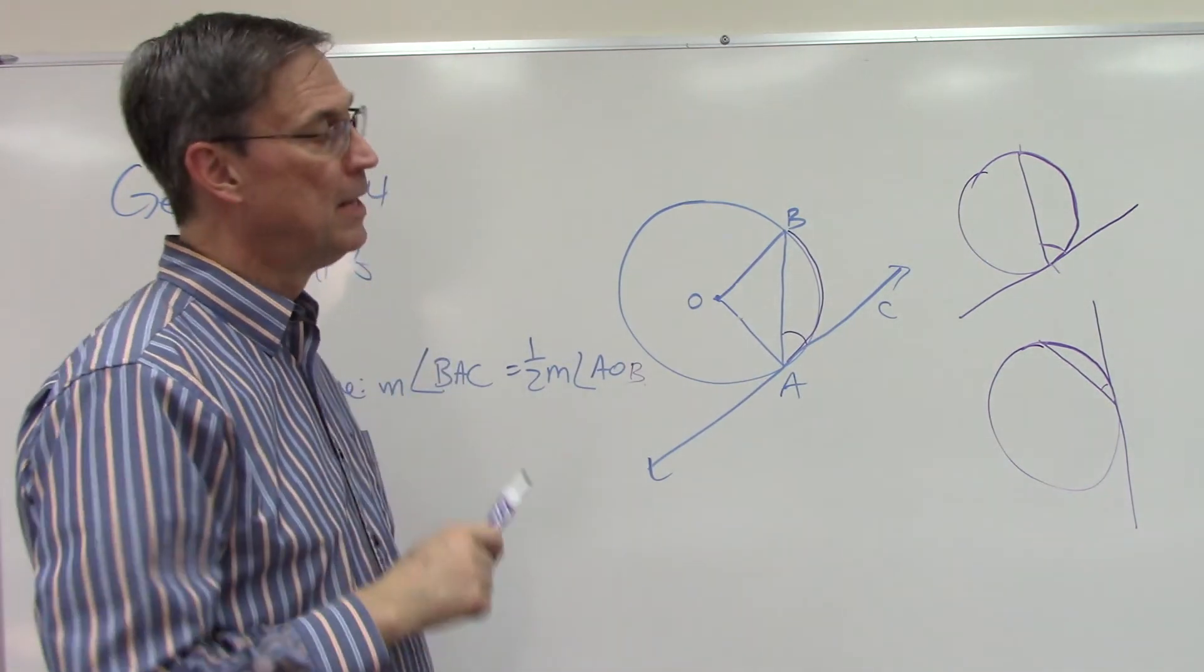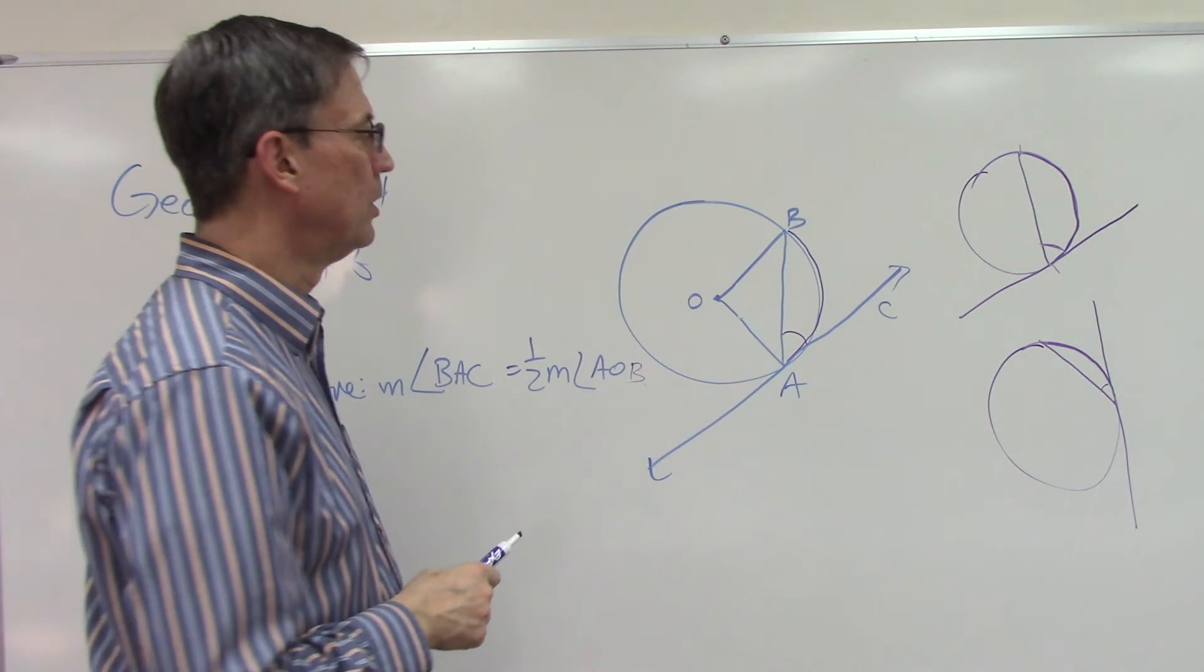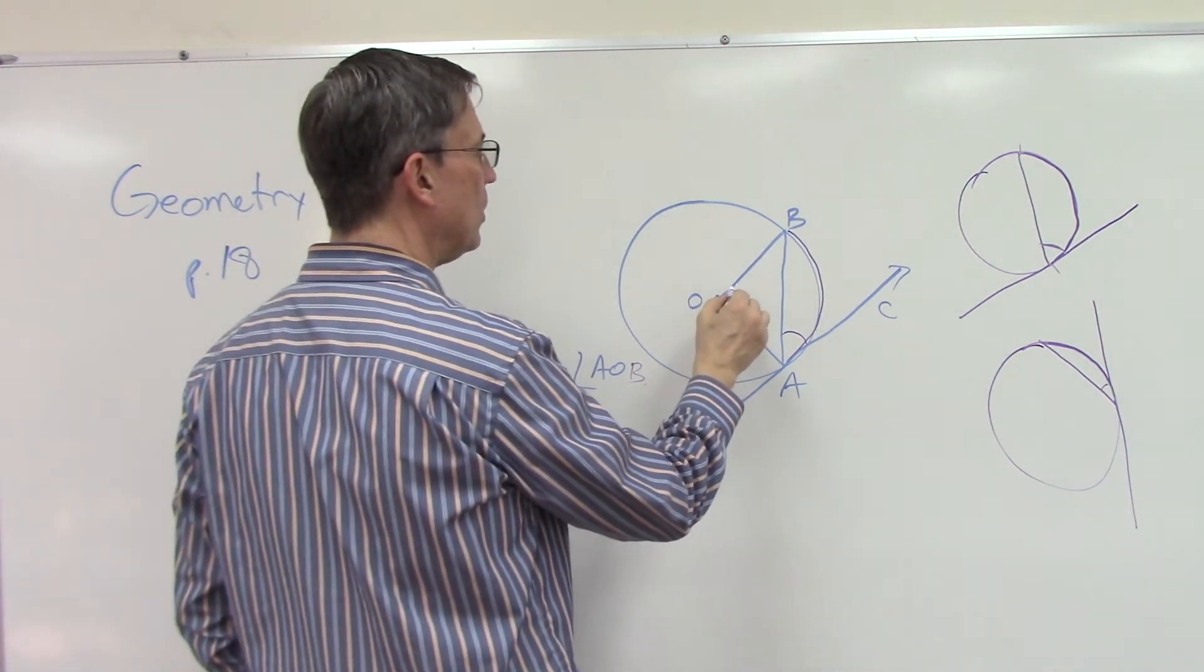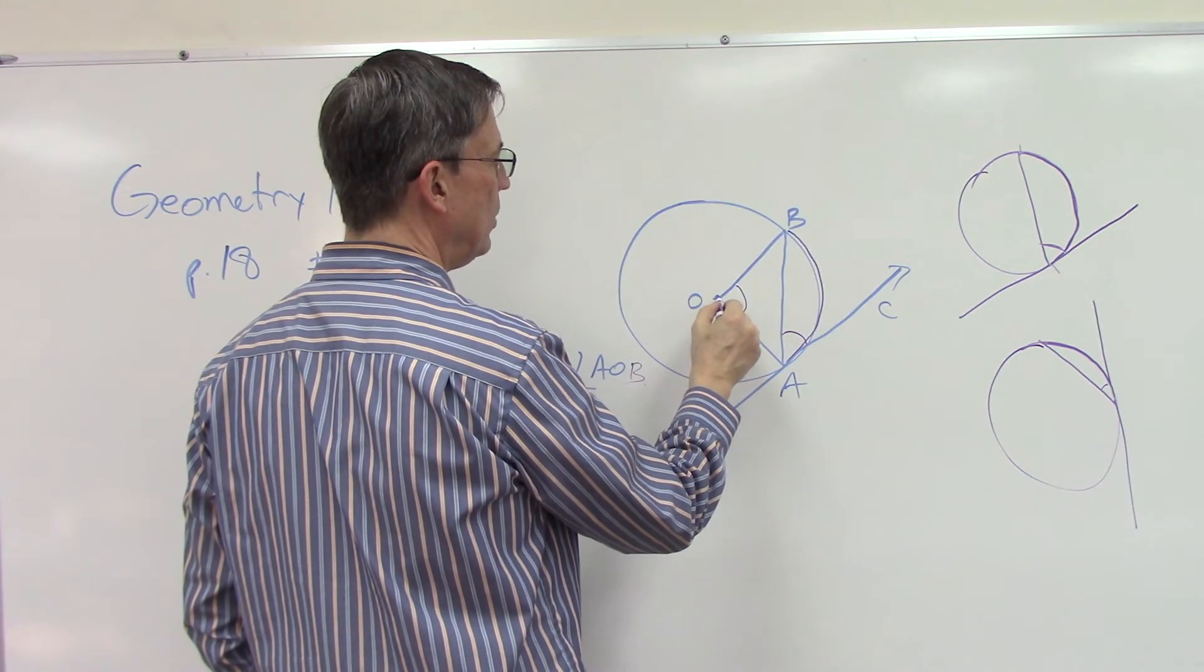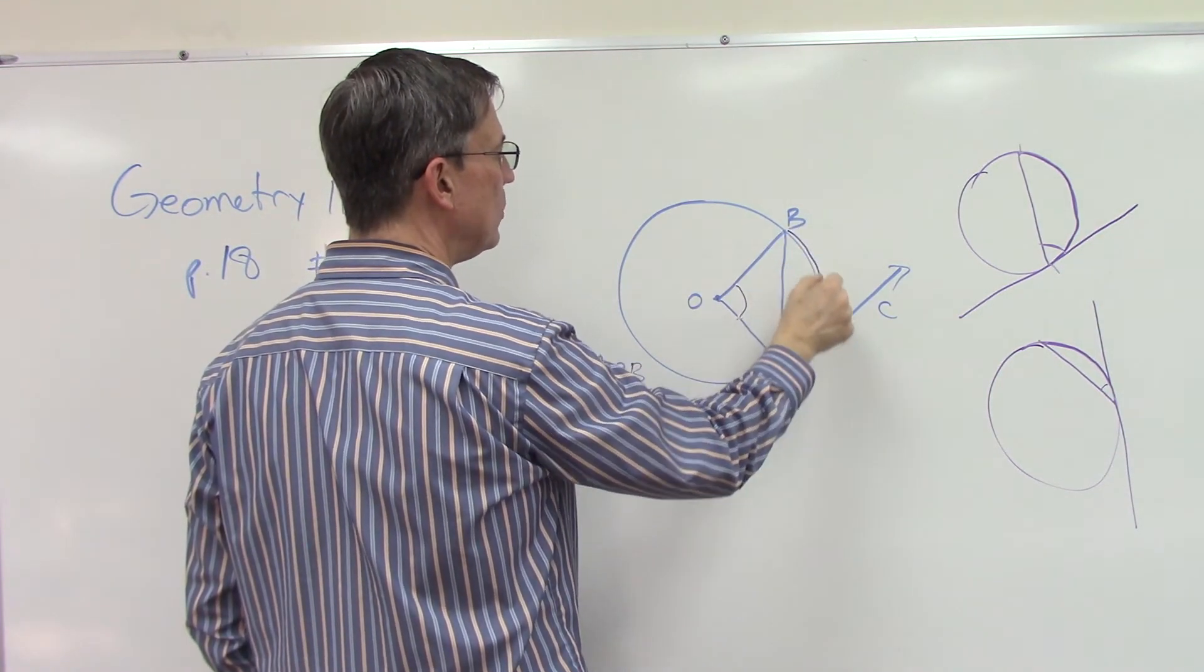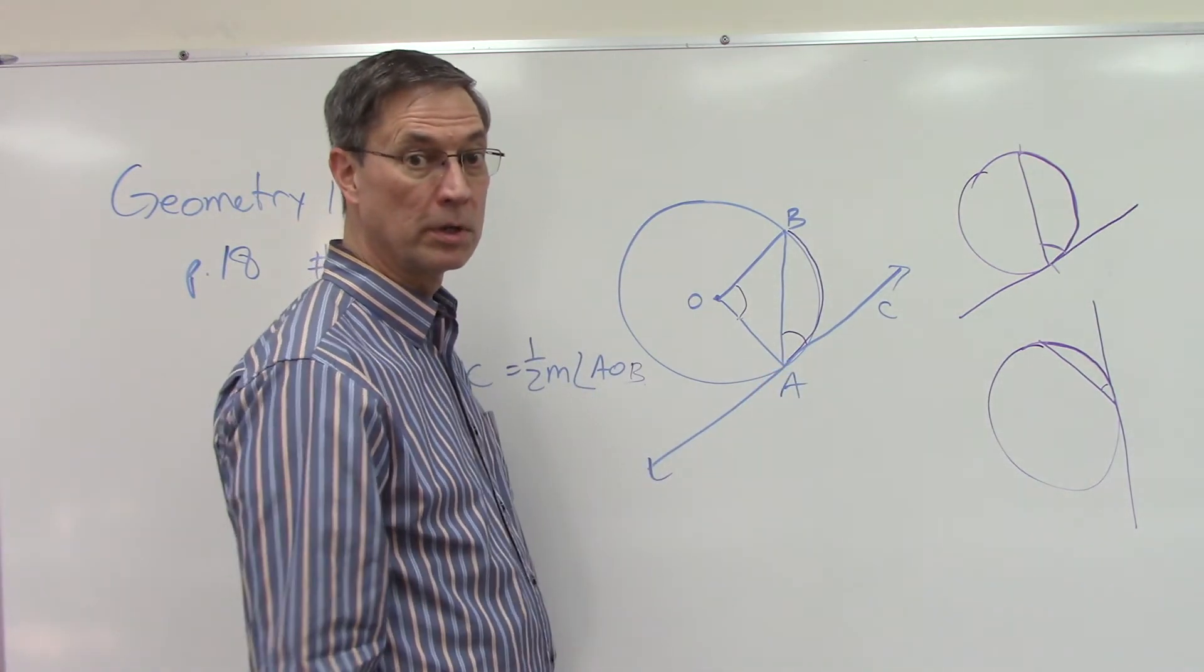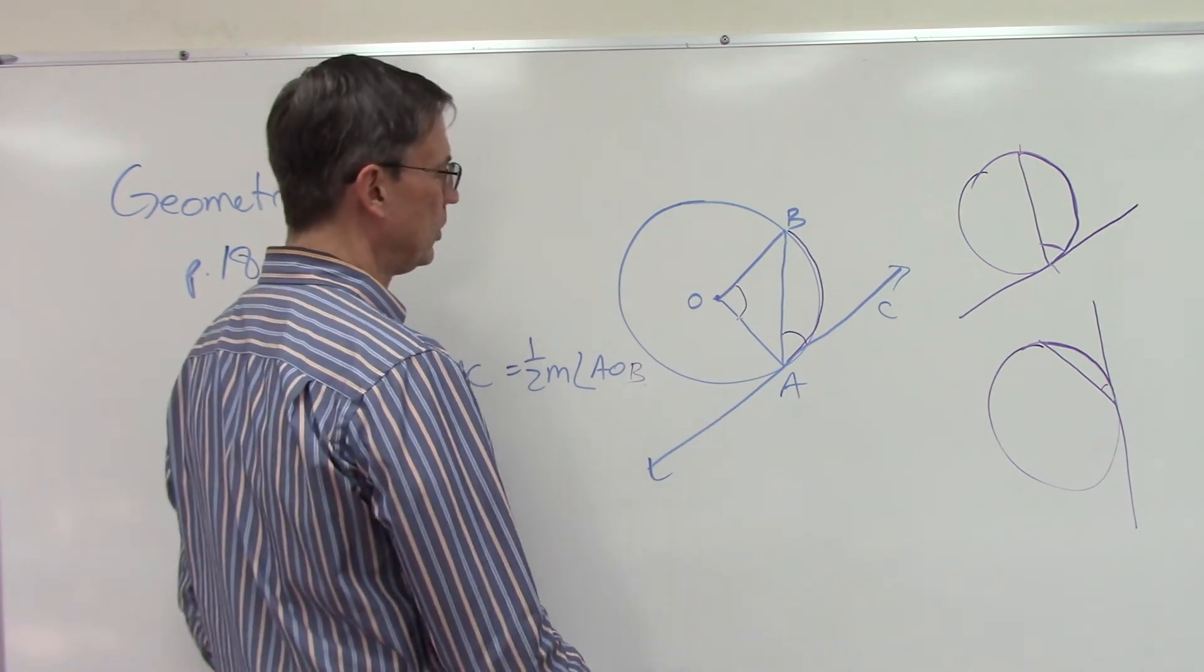Then, this is something we should remember from way back in a much earlier pace: a central angle, which is this angle here, the end point is the center of the circle, this angle is also equal to the intercepted arc. So this angle and this arc are always going to be equal.